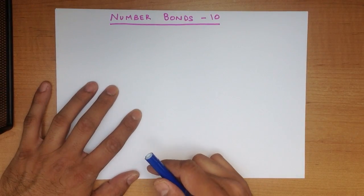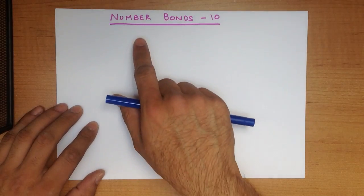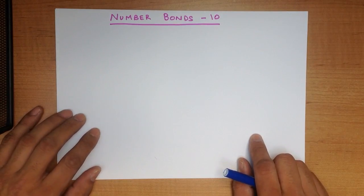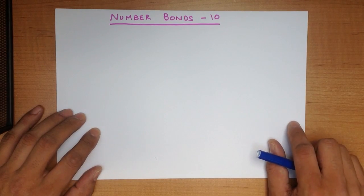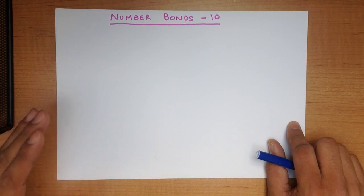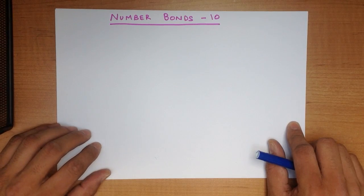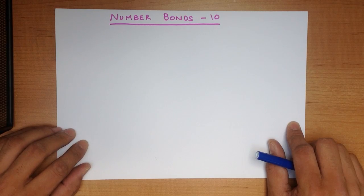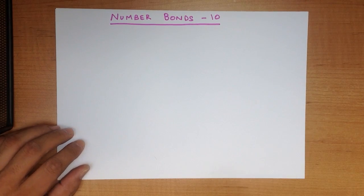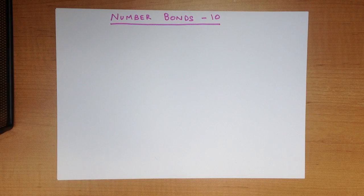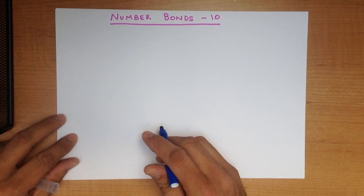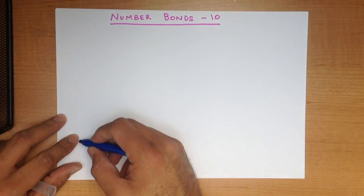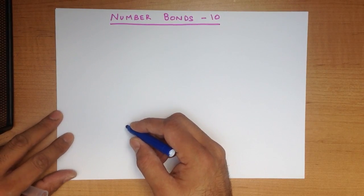In this tutorial we are going to go through number bonds to 10. This is very important for all children to know. If you can understand all of these, then mental arithmetic later on becomes a lot simpler. So how do we work out the number bonds? Firstly, what I'm going to do is to write the numbers from 0 to 10 on the left hand side.